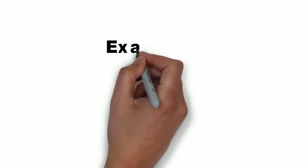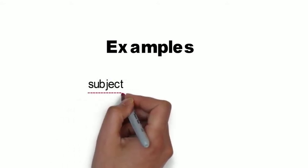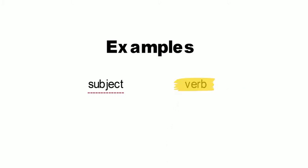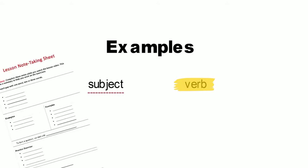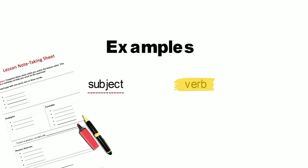Now, let's look at some specific examples. For each one, let's underline the subject and highlight the verb. The verb will be both the helping verb and the present participle. Look at the sentences on your note-taking sheet. You will need a pen and a highlighter. Are you ready?